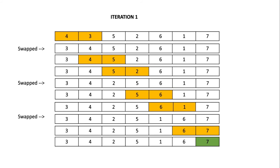Let's take an example. This example has seven elements in jumbled order: 4, 3, 5, 2, 6, 1, 7. Yellow blocks indicate elements being considered for swapping, and green means the element has already reached its correct position. In the first iteration, we consider the first two elements 4 and 3. Since 4 is greater than 3, we swap them to get 3, 4. We then consider the next two elements, 4 and 5 — 4 is not greater than 5, so no swapping.